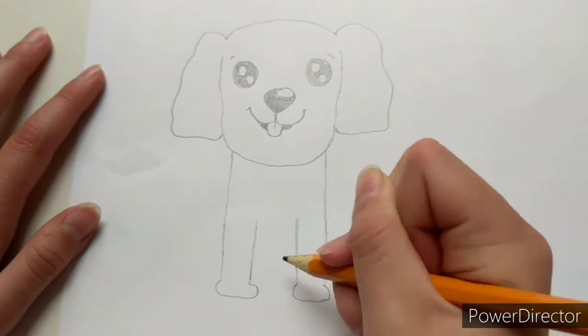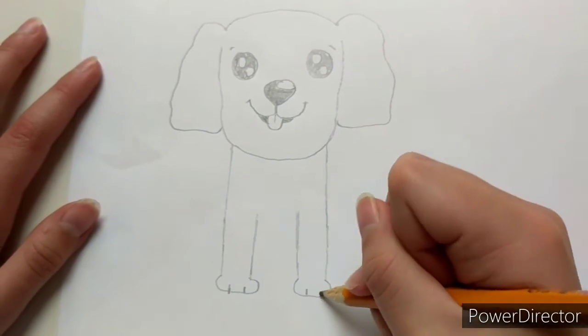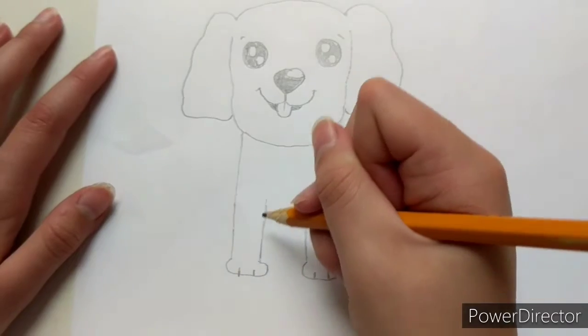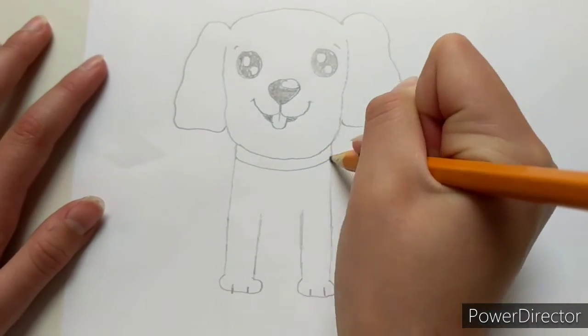Do the same on the other side. And then finish off the paw like that. Now we are going to be going back up here to do the collar.